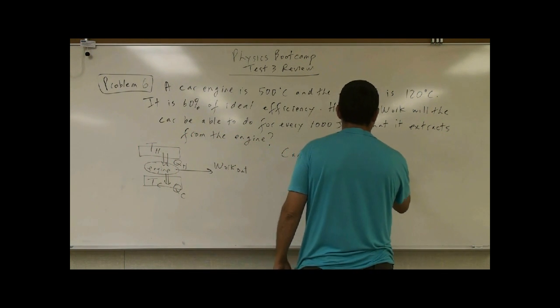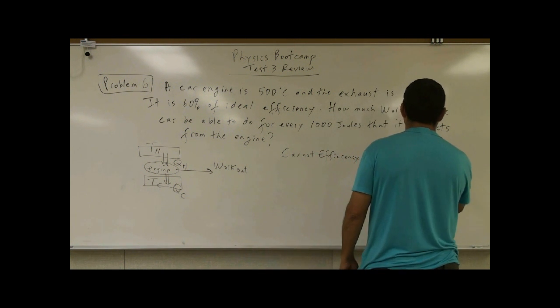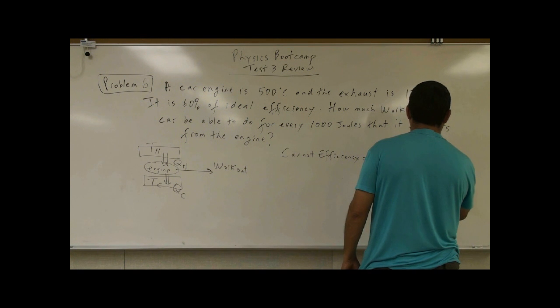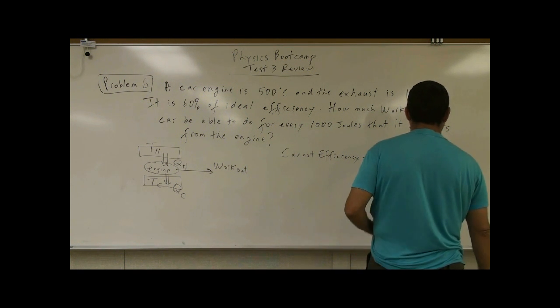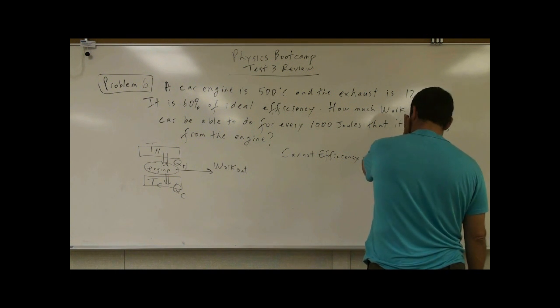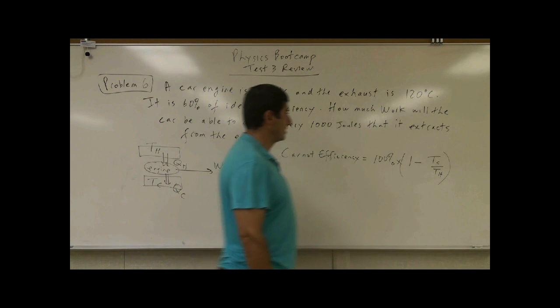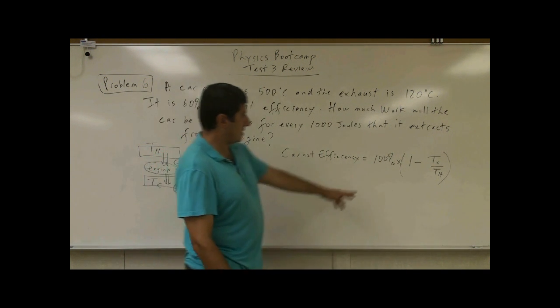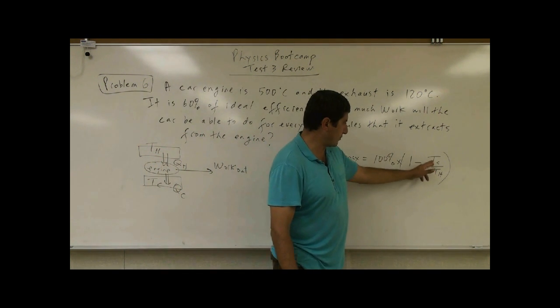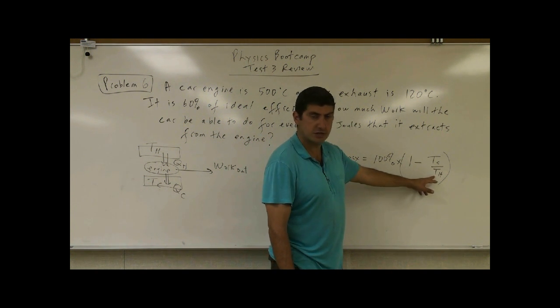100% times 1 minus T cold over T hot. So it's the ratio of the two temperatures, the cold temperature to the hot temperature. Of course, if they're the same temperature, the hot and the cold, if they're both the same,